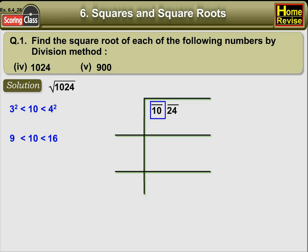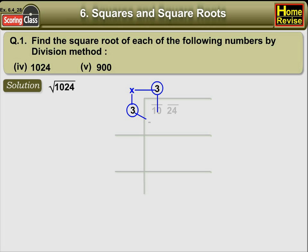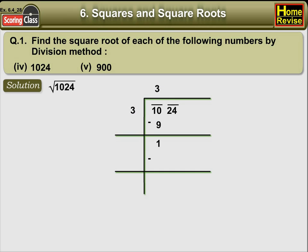Now, take this number 3 as the divisor and the quotient and let us divide 10 with 3. So, we get 9 and 10 minus 9, we are left with 1. So, the remainder is 1. Let us carry forward the other number under the bar, which is 24. So, now, the new term is 124.